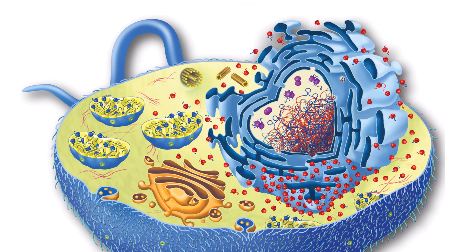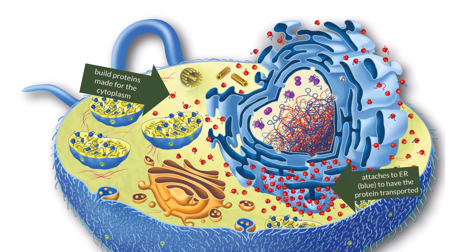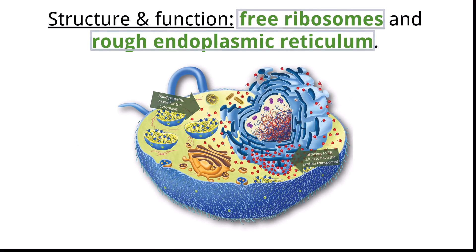Free-floating ribosomes within the cytoplasm primarily create proteins that are used within the cytoplasm that have a vast array of functions. However, if a ribosome is synthesizing a protein that needs to be sent elsewhere, like a specific location within the cell or even transported out of the cell via the help of the Golgi, the ribosome will attach to the endoplasmic reticulum. The protein created will be pushed into the lumen of the endoplasmic reticulum and then be placed into a vesicle where it can then be transported.